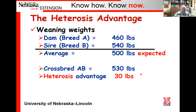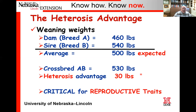Heterosis is extremely important—it is critical for reproductive traits, where we get a big boost. Even though heritability for reproductive traits is low, making selection progress slow, when we mate different breeds together we get a big boost in reproduction associated with heterosis. That makes the crossbred female absolutely critical for your commercial cow-calf producer.